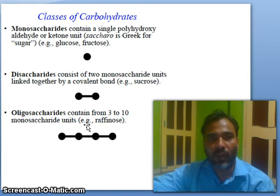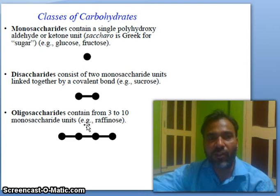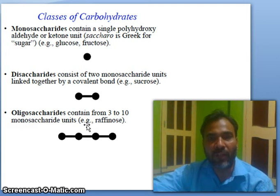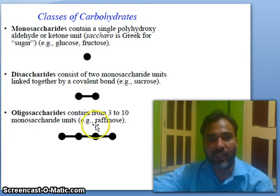Examples of monosaccharides are glucose and fructose. Disaccharides consist of two monosaccharide units linked together by a covalent bond — examples are sucrose and maltose. Oligosaccharides contain from three to ten monosaccharide units; example is raffinose.